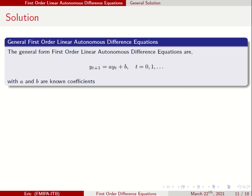Remember again, what do we mean by first order: t plus 1 and t, so you have first order. Linear: all the variables yt+1 and yt are to the power of 1. Autonomous: it doesn't depend on t explicitly. And difference equation: this is period t+1 and period t, so you have the difference. With a and b as known coefficients, we are going to talk about the solution of this.